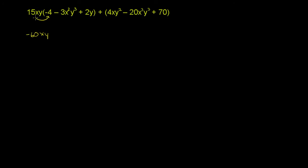And then we have 15xy times negative 3x squared y to the third. So let's think about how this is going to happen. We're going to have 15 times negative 3, which is negative 45.